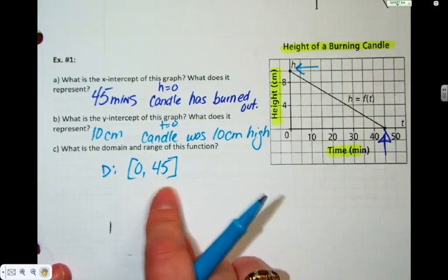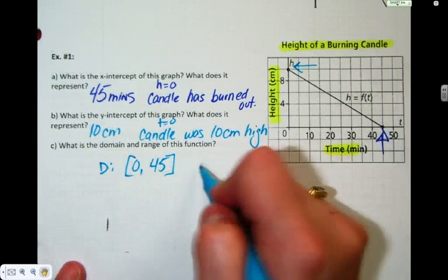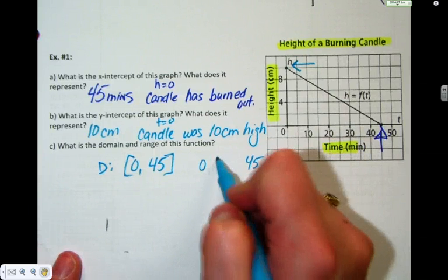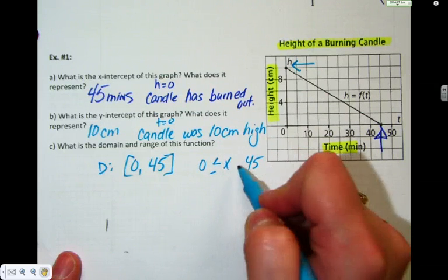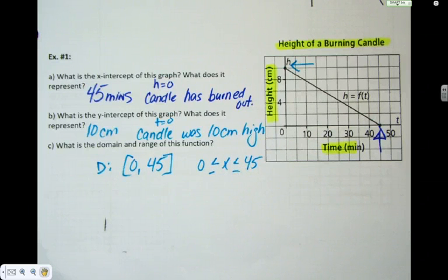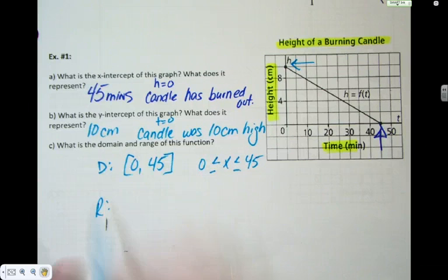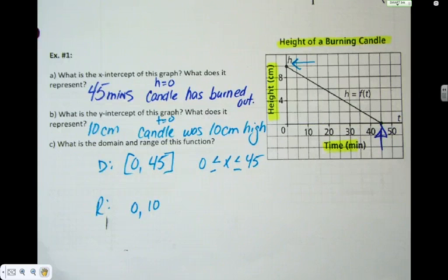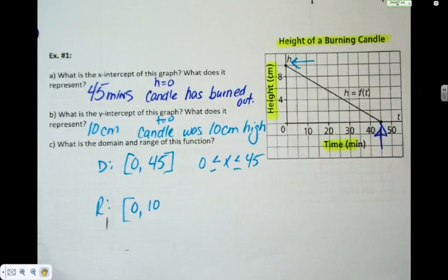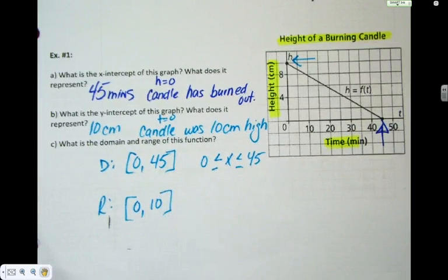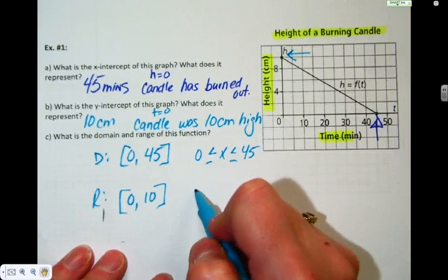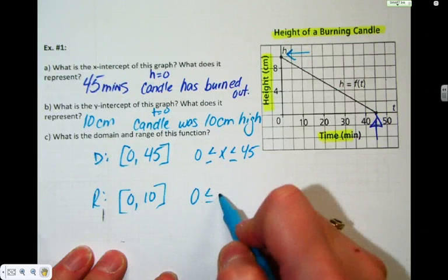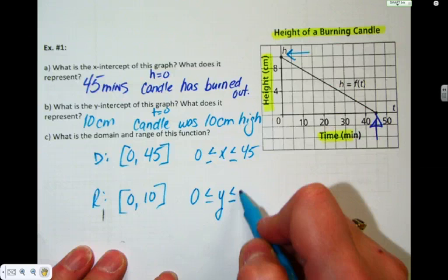If we wanted to give the other notation, how do we say between zero and 45? What's the notation for between? Less than or equal to x, less than or equal to. You can pick whichever one of those notations you like better. The range, look down, then look up. What's the lowest point on the y-axis? Zero. What's the highest point on the y-axis? If we wanted to use set notation, it would be zero less than or equal to y less than or equal to 10.